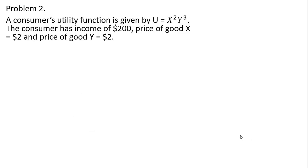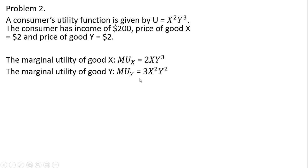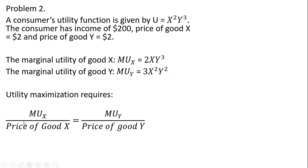Problem two has a slightly different utility function and slightly different income and prices. The setup is the same — we're given the marginal utility of good x and the marginal utility of good y. Utility maximization once again requires the condition that marginal utility per dollar is equalized across both goods, so we substitute everything into that formula.